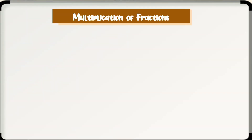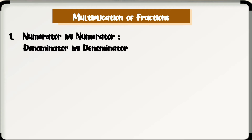At this point, we are done with the addition and subtraction of similar fractions, dissimilar fractions, and mixed numbers. We will now proceed with the multiplication of fractions. To multiply fractions, multiply the numerators to get the numerator of the product. Multiply the denominators to get the denominator of the product. Then simplify the product if needed.